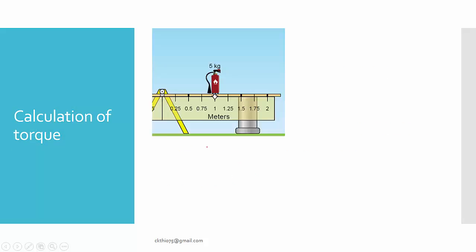How do you calculate torque? Very simple — just apply the formula: force times distance. Do take note that if the mass is given, you must use the weight, not the mass. Weight equals mass times g (mg), multiplied by the distance.